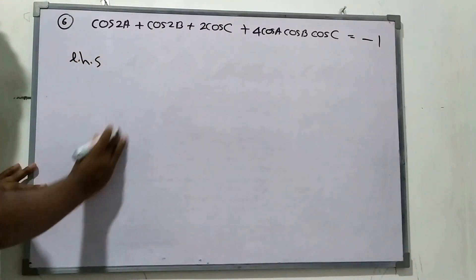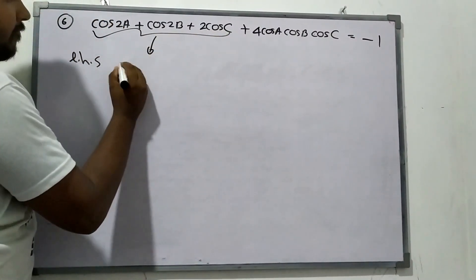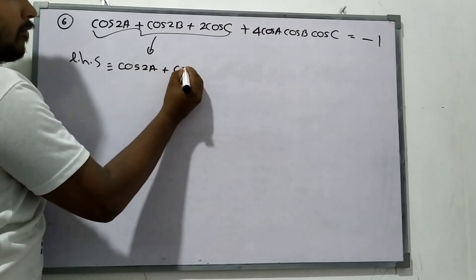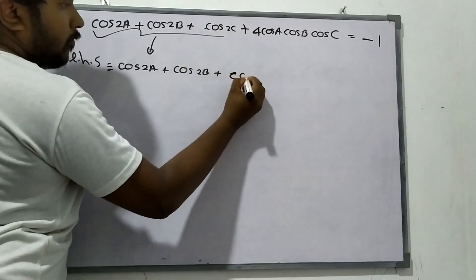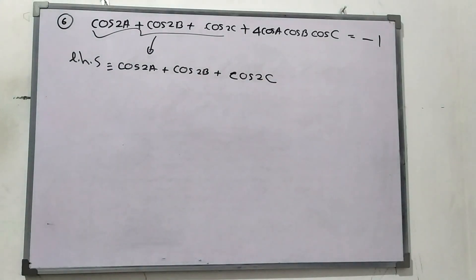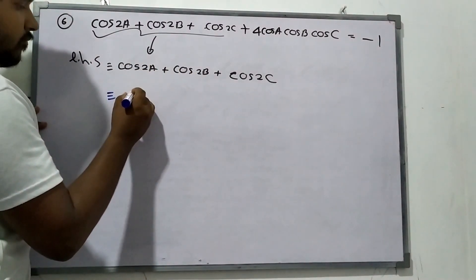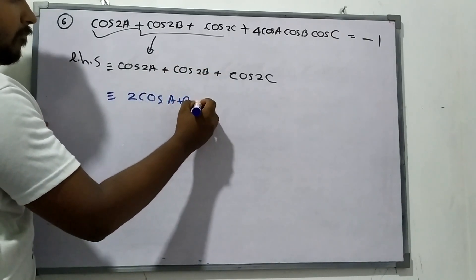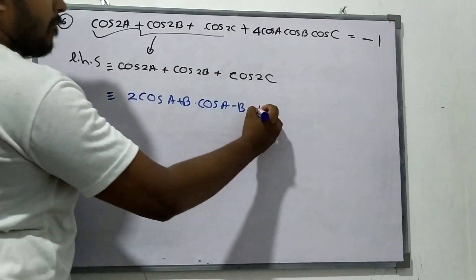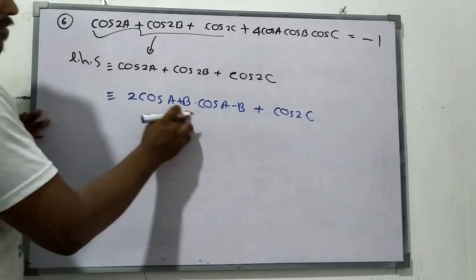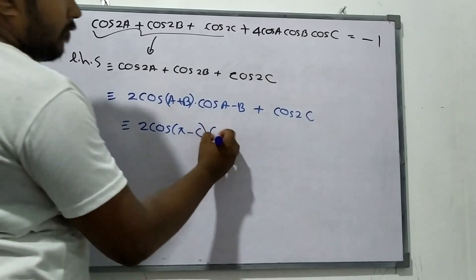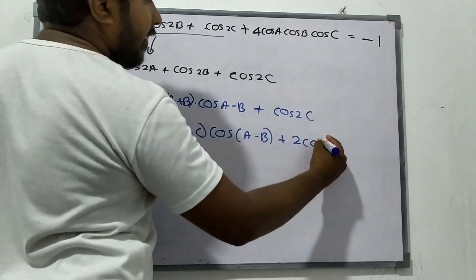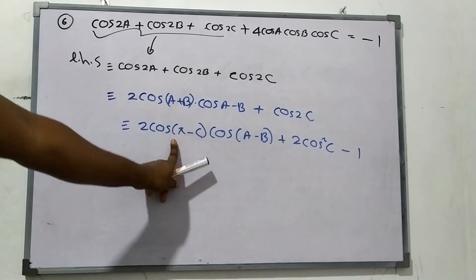Starting from the left-hand side with only this part: cos 2A plus cos 2B minus 2 sin... adding cos 2C. When we add cos C, cos C can be taken as a common factor. The expression simplifies step by step.